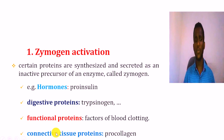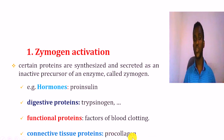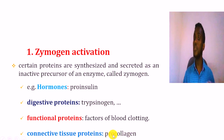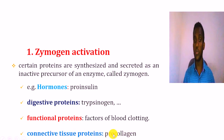Another example of a zymogen is pro-collagen. The normal active protein is collagen, and collagen's inactive precursor form is pro-collagen.